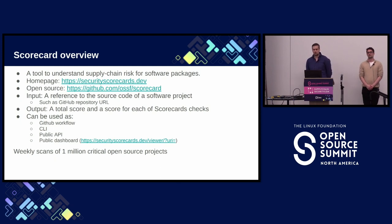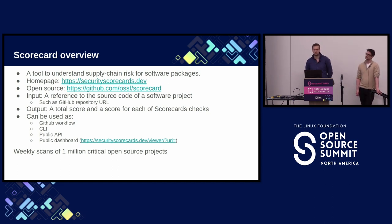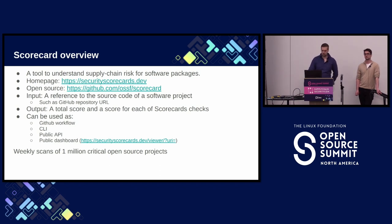Scorecard can be used on the command line or as a GitHub workflow. Scorecard also runs weekly scans of a ton of critical open source packages and makes that data available through a public API or a dashboard that you can browse in your browser.